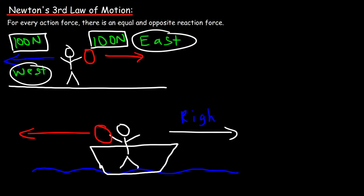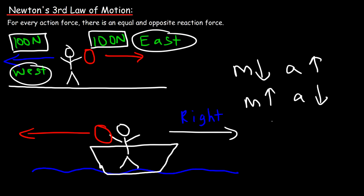Because the mass of you and the boat is much greater than the ball, you're not going to move very far — the acceleration you experience will be very small. The ball, which has less mass, will feel a greater acceleration. With the same force, if you decrease the mass the acceleration increases, and if you increase the mass the acceleration decreases. If you throw the ball with a force of 200 Newtons, you'll feel a force of 200 Newtons in the opposite direction.